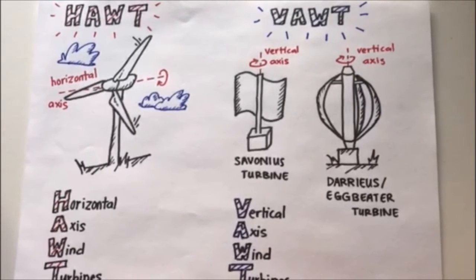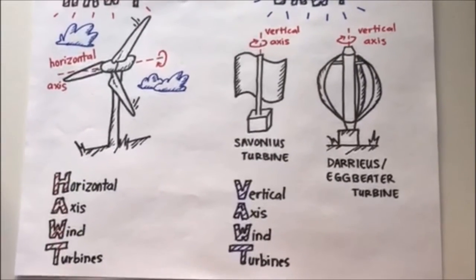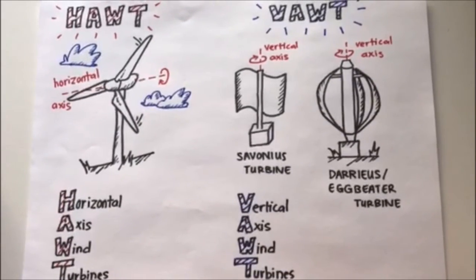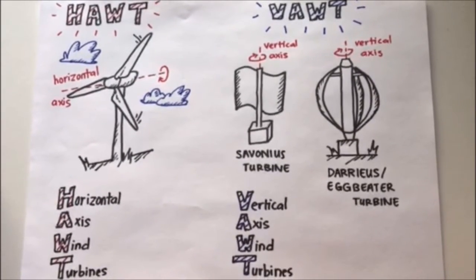Wind turbines are classified into two categories: horizontal-axis wind turbines, or HOTs, and vertical-axis wind turbines, or VOTs.